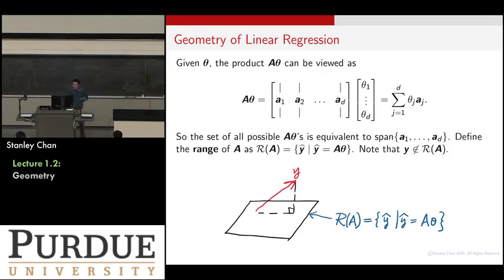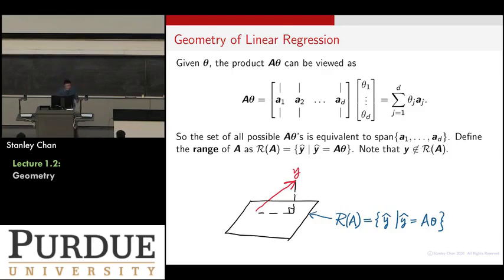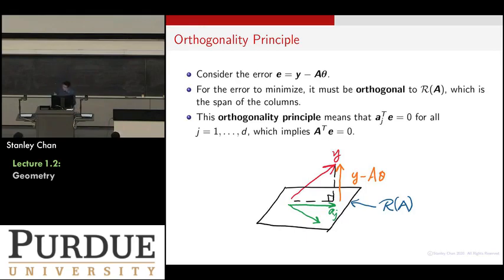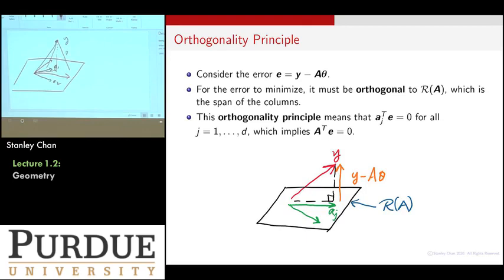I define R(A), called the range space or column space of A. It contains all the possible Y-hat such that Y-hat = Aθ. Y doesn't live in R(A), but R(A) is that plane. The error is defined as E = Y − Aθ. In the diagram, E is the vector from the plane to Y. The error can be big or small, but one error is minimized — that's when your error vector is perpendicular to your plane.